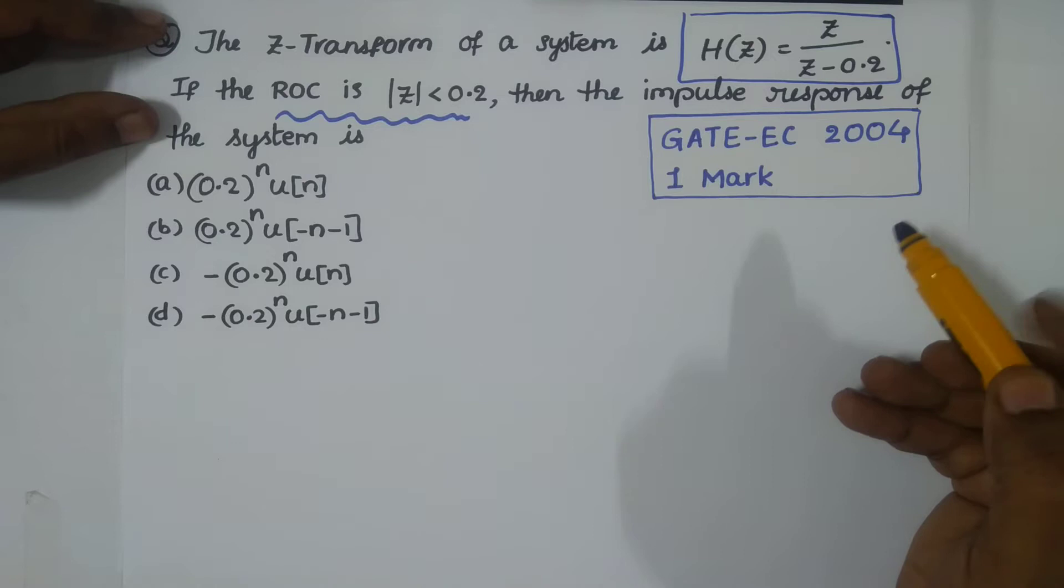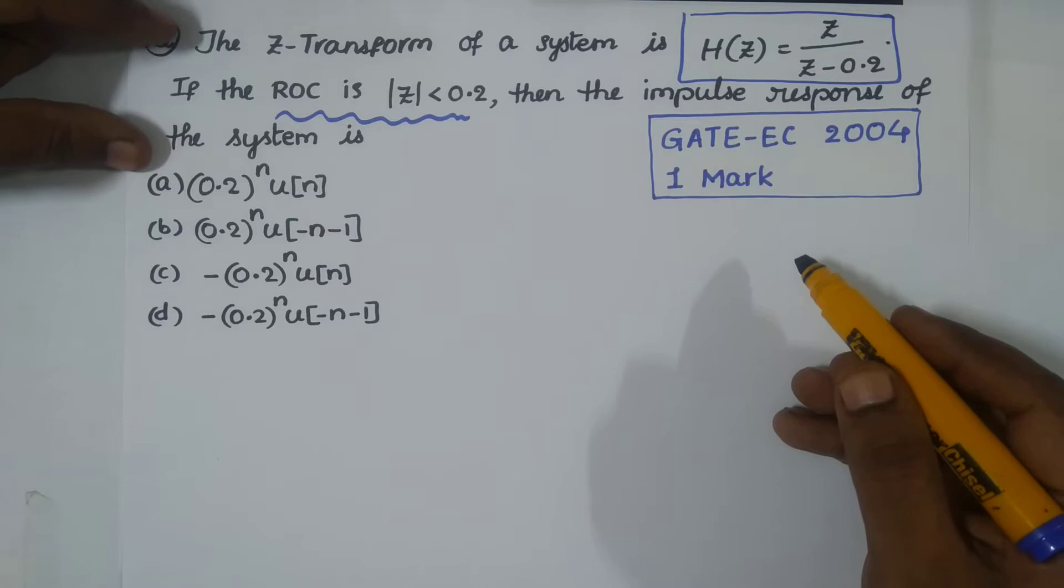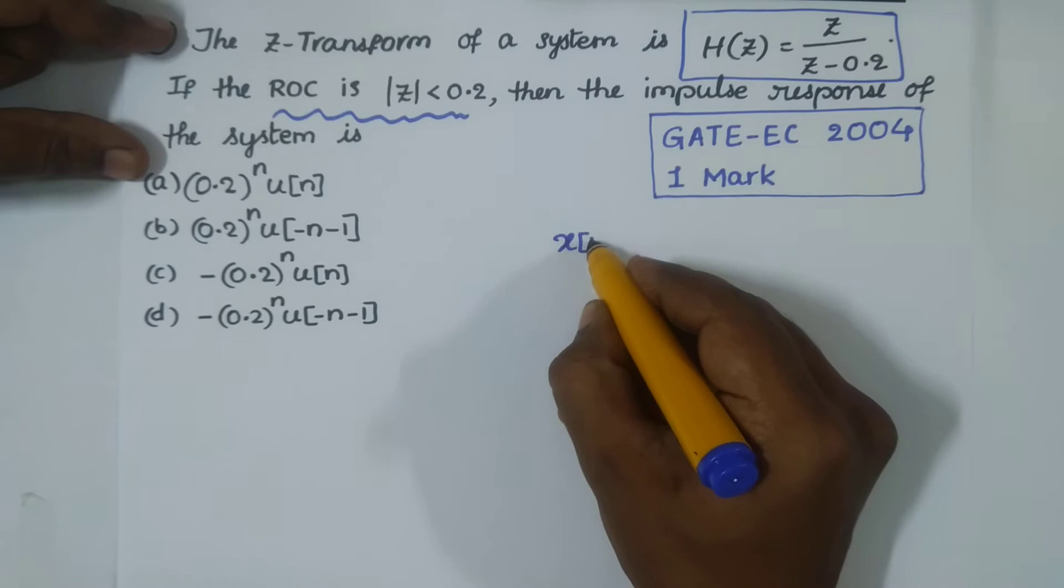We need to find its inverse Z-transform to obtain H(n). There's no big deal in this. For example, let's take by definition X(n) as my time domain sequence. If you find its Z-transform we get X(z).